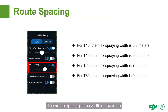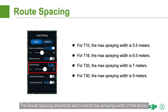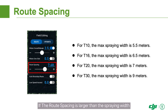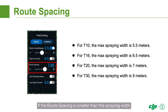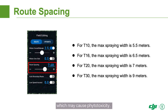The route spacing is the width of the route — that is, the distance that the drone moves laterally. The route spacing should be set to match the spraying width of the drone. If the route spacing is larger than the spraying width, some areas will not be sprayed. If the route spacing is smaller than the spraying width, some areas will be sprayed multiple times, which may cause phytotoxicity.